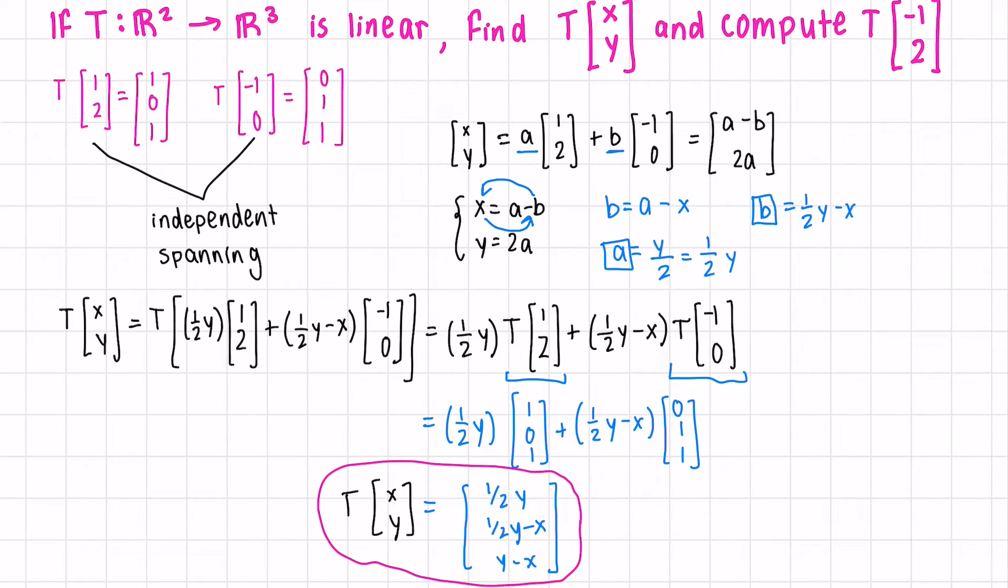Next, we're asked to compute where will negative 1, 2 end up? Well, let's just apply our rule that we've just found. First, we take half of the second component. Then half of the second component minus the first component, 1 minus negative 2. And then the second component minus the first component.